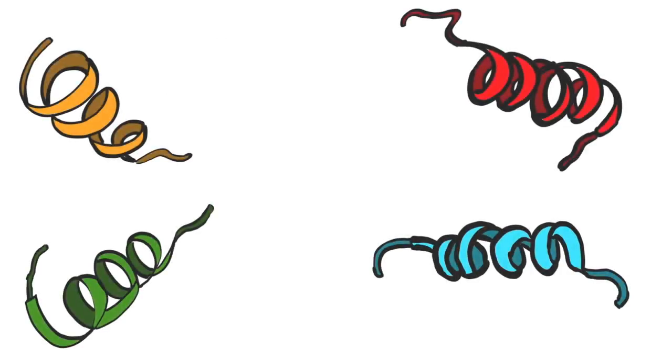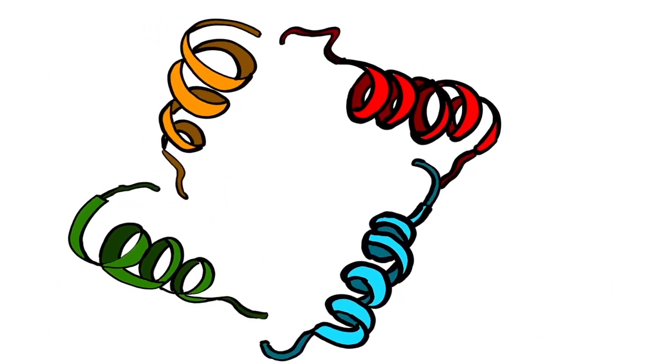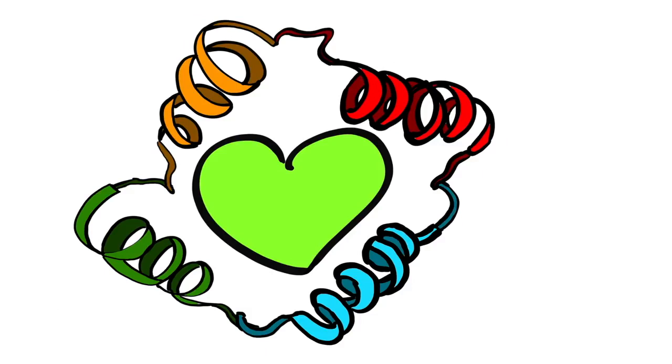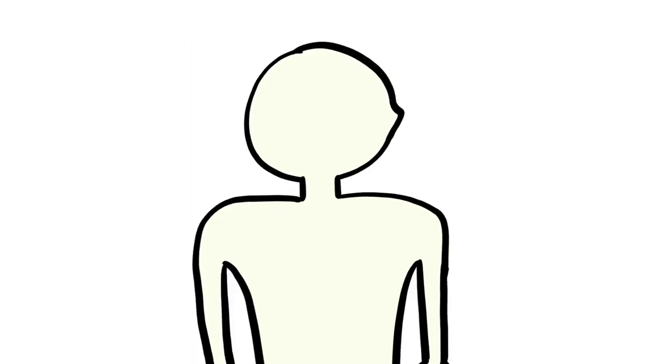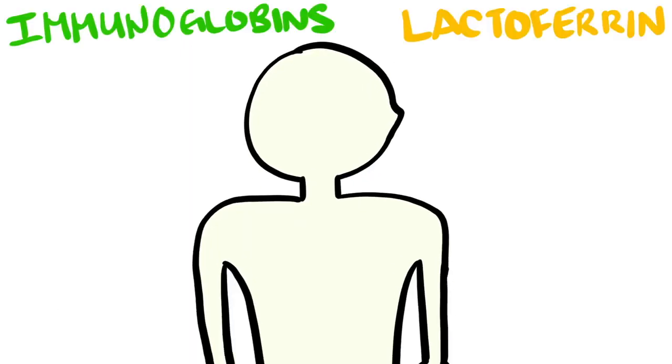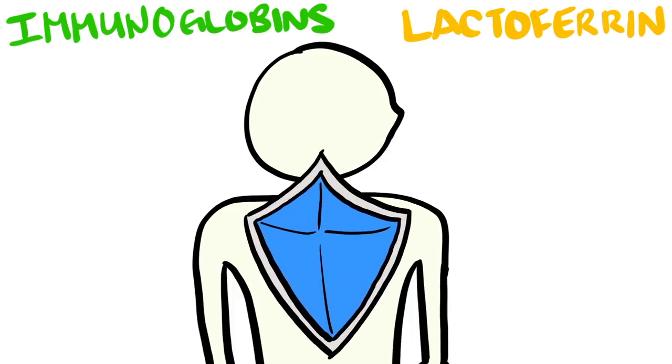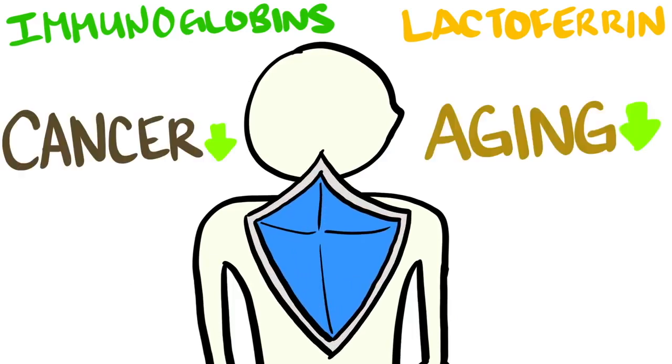The awesome thing about whey amino acids is that they form larger peptides and proteins that serve more health benefits. Perhaps the most beneficial for adults are the immunoglobulin and the lactoferrin proteins, which can aid your immune system, as well as having anti-cancer and anti-aging effects.